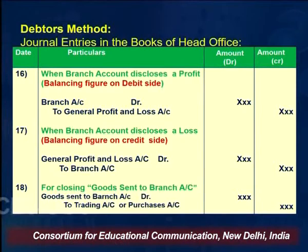The last entry is for closing the Goods Sent to Branch Account. If any balance remains in this account, it must be transferred to the Trading Account or Purchase Account of the head office. The entry is: Goods Sent to Branch Account debit to Trading Account or Purchase Account.